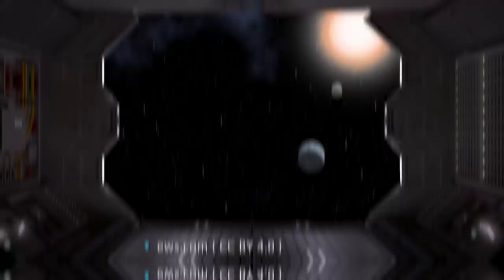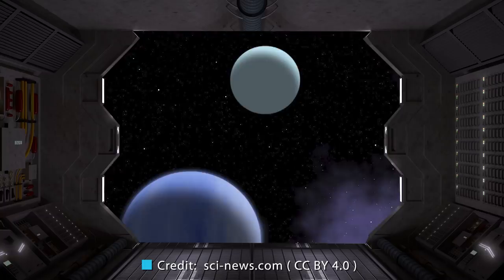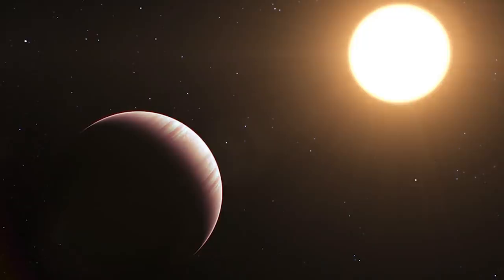Kepler-160 was already known to have at least two planets, Kepler-160b and Kepler-160c. KOI 456.04 would be the newest, and it turns out there may actually be four planets in total, Heller said.